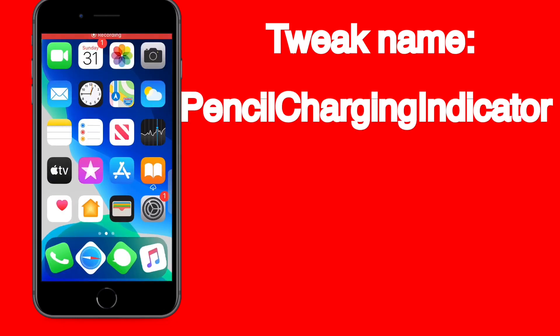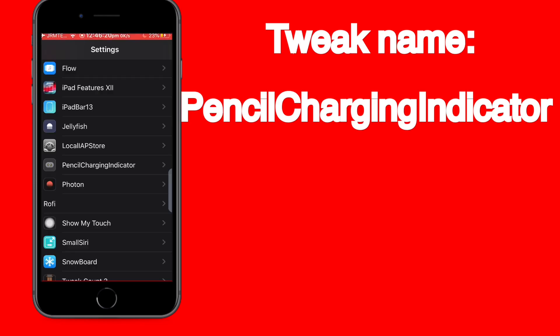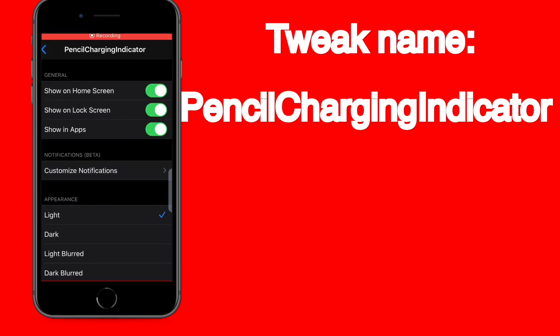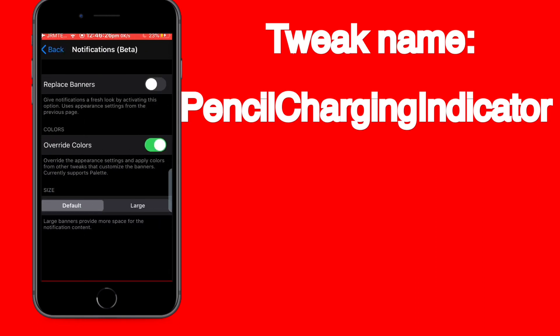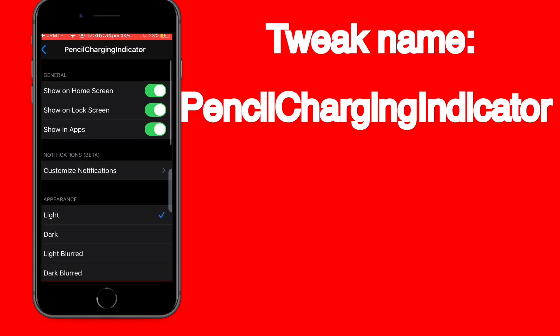The next tweak is Pencil Charging Indicator, which I really like. When you charge your phone it will tell you it's plugged in, like in the Apple Pencil style. It will also tell you when you have low battery in that same format. You can also customize these, and it also has light and dark swap modes.